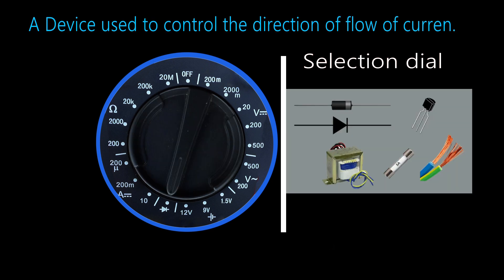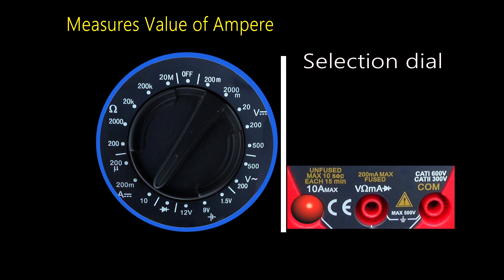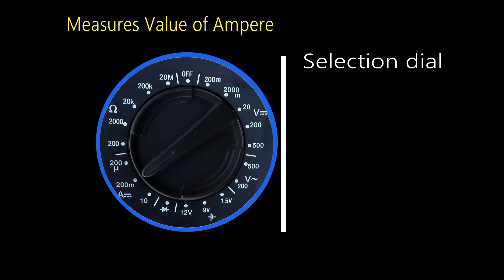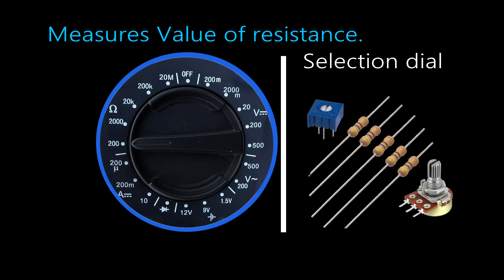The diode selection dial is very important to determine the value of parts. You have to select the dial according to the value of resistance.